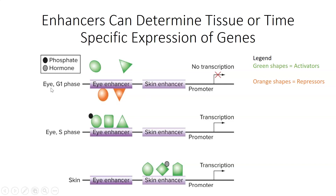For a given cell type, such as an eye cell, there can also be different activators or repressors present at different times — for example, in G1 versus S phase of the cell cycle. The gene can be on during one phase when only activators are present, but in another phase repressors predominate and turn off expression. So activators and repressors can direct both cell-type specific and time-specific expression depending on which factors bind a given enhancer.